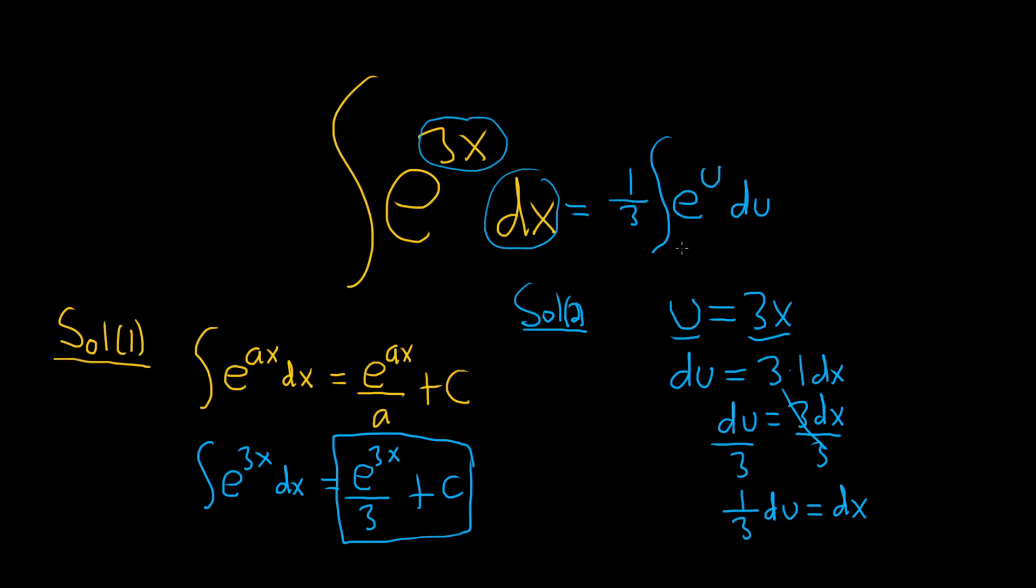And now we can use the formula for e to the u. The integral of e to the u is e to the u. So this will be 1 third e to the u plus our constant of integration, capital C. But we said u was 3x, so this is 1 third e to the 3x plus capital C. And that would be the final answer.